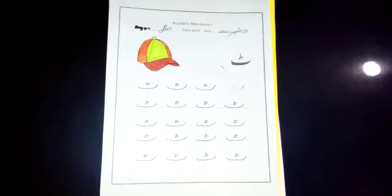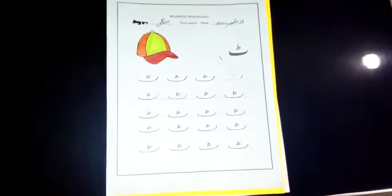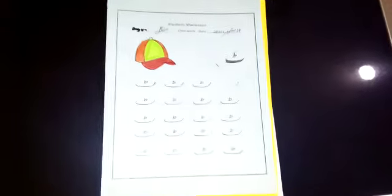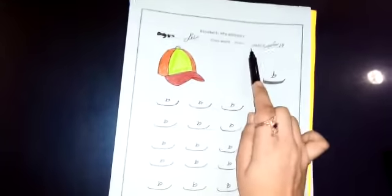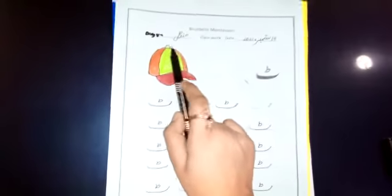Mention the date on the top of the page. Okay students, what is today's date? 14 September 2021. And how do we write this in Urdu? 14 September 2021. And what is the day today? Tuesday.